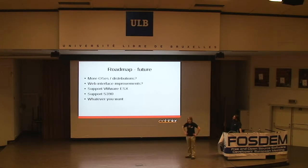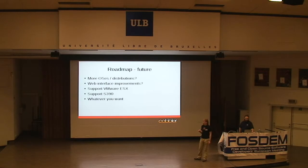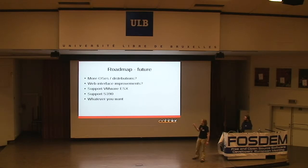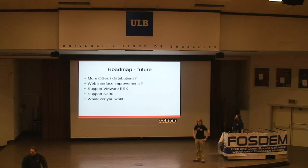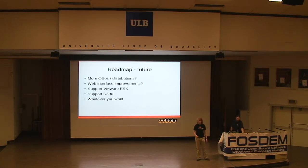Also planned: support for more distributions - the personal wish list includes FreeBSD and NetBSD - web interface improvements (possibly submitted for Google Summer of Code), and VMware ESX support since Xen, KVM, and QEMU are already supported. S390 mainframe support was added last week so it will likely move to release 1.6. Because this is a community project, users can inject any feature they want on the roadmap by submitting patches or sharing good ideas.